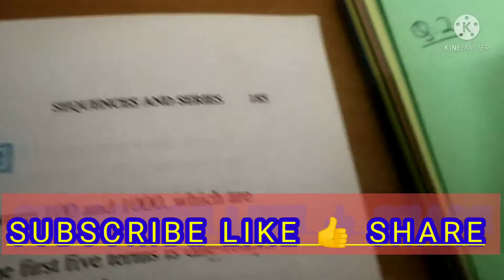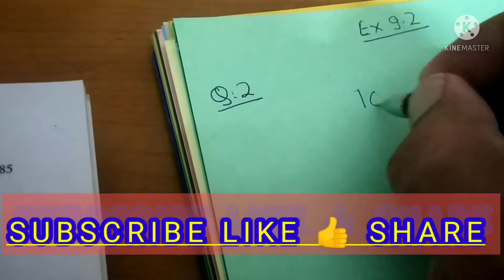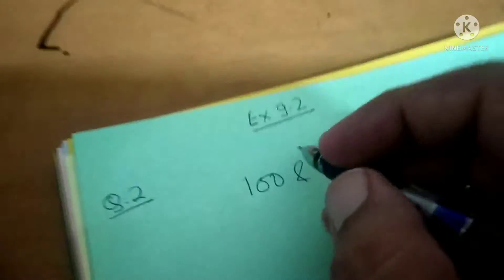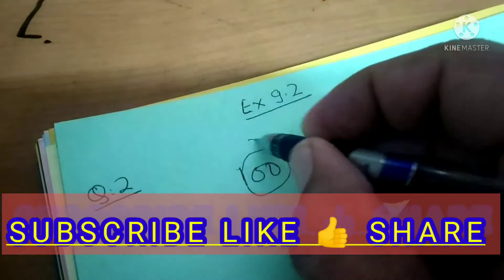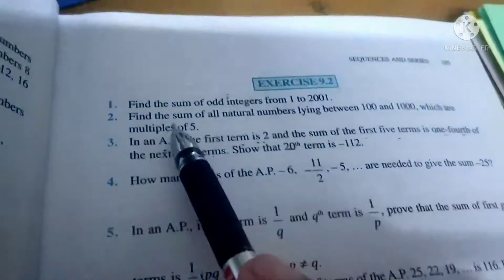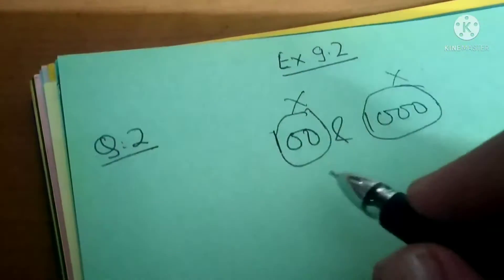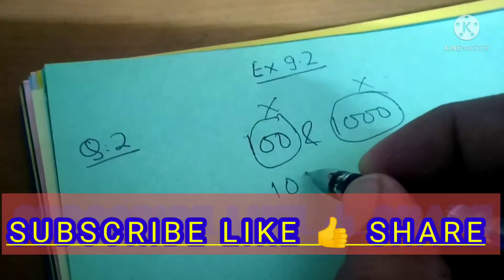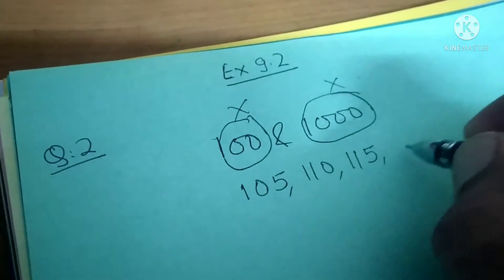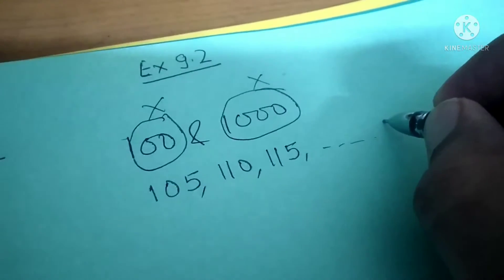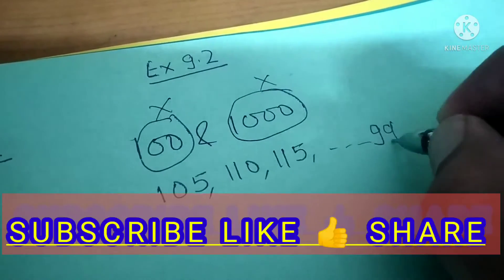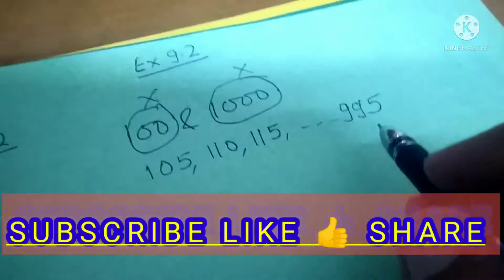Lying between 100 and 1000, so we do not have to include these endpoints. Which are the multiples of 5? 105, then 110, then 115, and this way it will be last which is 995. This will be the last one.